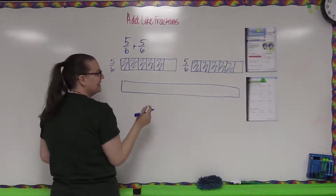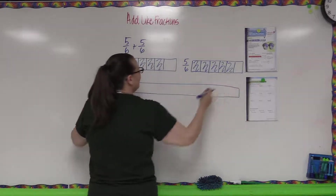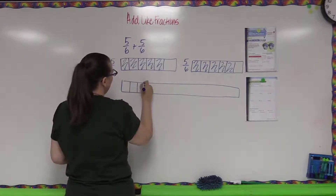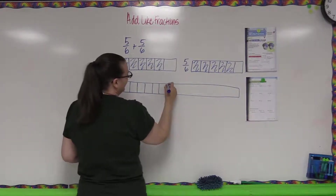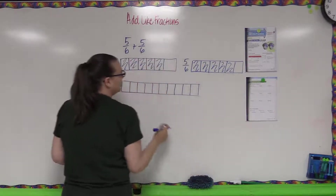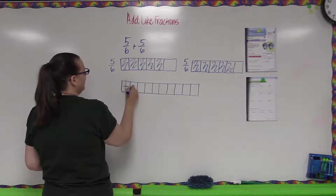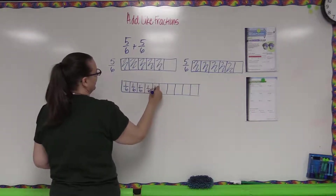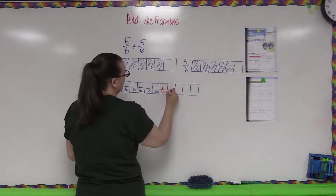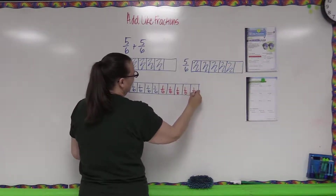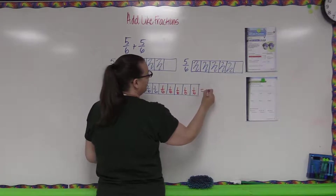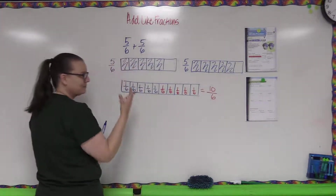These are still going to be measured in sixths, but we need enough space for both. One, two, three, four, five for the first one — six, seven, eight, nine, ten for the second. Using those unit fractions, here's the first set and here's the second in a different color. Counting them all up: one through ten — we have ten sixths. That's one way to add them together.